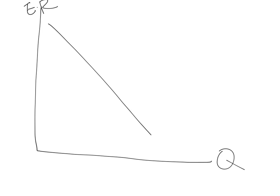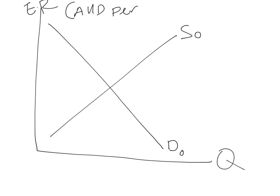What does the foreign exchange market look like in equilibrium? Here you have the quantity traded on one axis and your exchange rate on the other. Here you have the demand for the Australian dollar and the supply of the Australian dollar — Australian dollar per US dollar, for example. In equilibrium, you get Q0 Australian dollars traded at the exchange rate of E0. Let's give it a number: $3, and Q0 equals 100. This is the initial equilibrium situation.